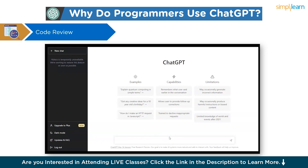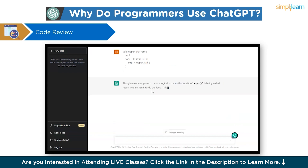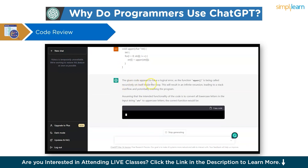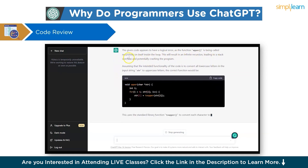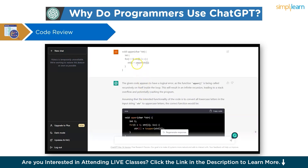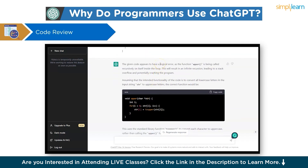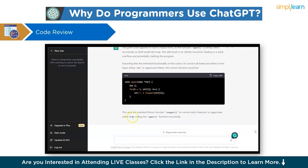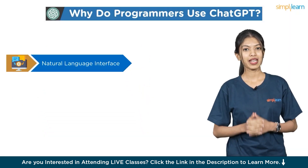In this example, we gave a function called 'upper' with a keyword called 'upper' inside the loop, which should have been 'toupper'. ChatGPT identified that the given code has a logical error — the function 'upper' is being called recursively on itself inside the loop. It pointed out that using the keyword 'toupper' is required to convert the string to uppercase, and it provided the corrected code.